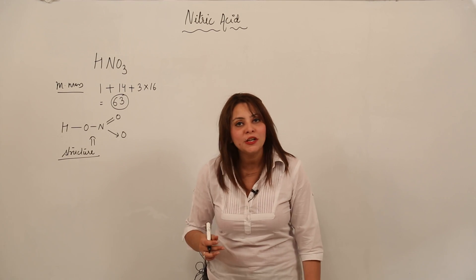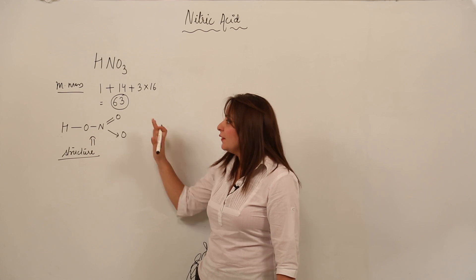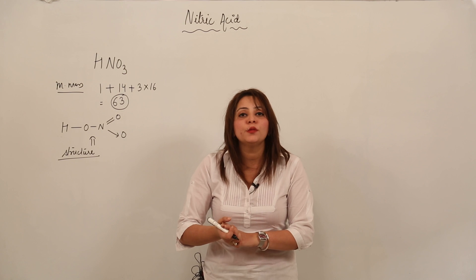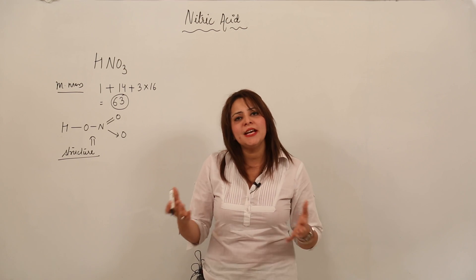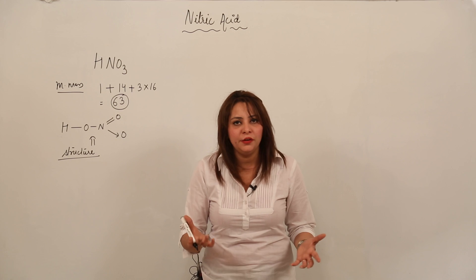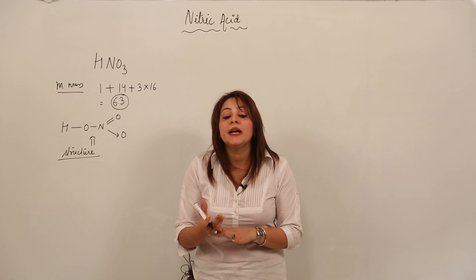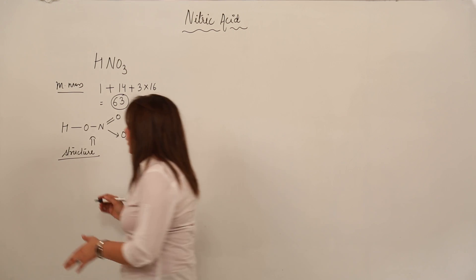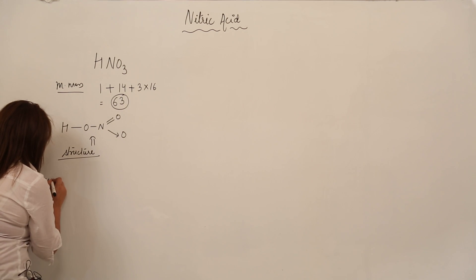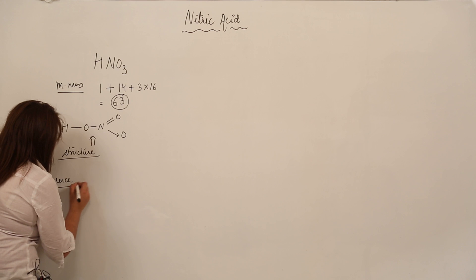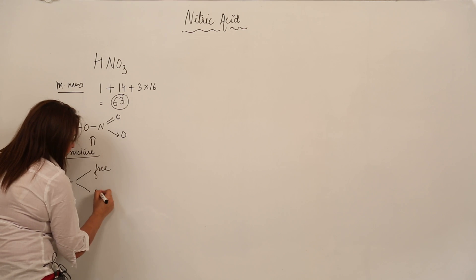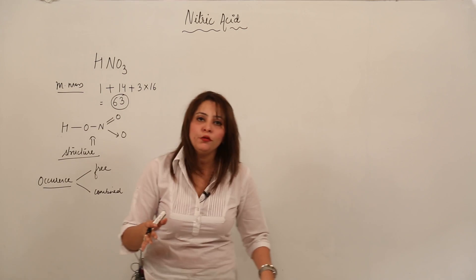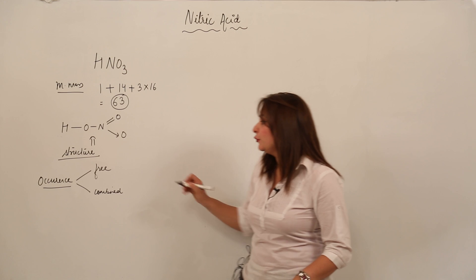The structure of HNO3 has one double bond, one coordinate bond, and two single covalent bonds. Now, where do we get nitric acid in nature? It occurs in the environment — in air and water — and it occurs in nature in both free form and combined form.